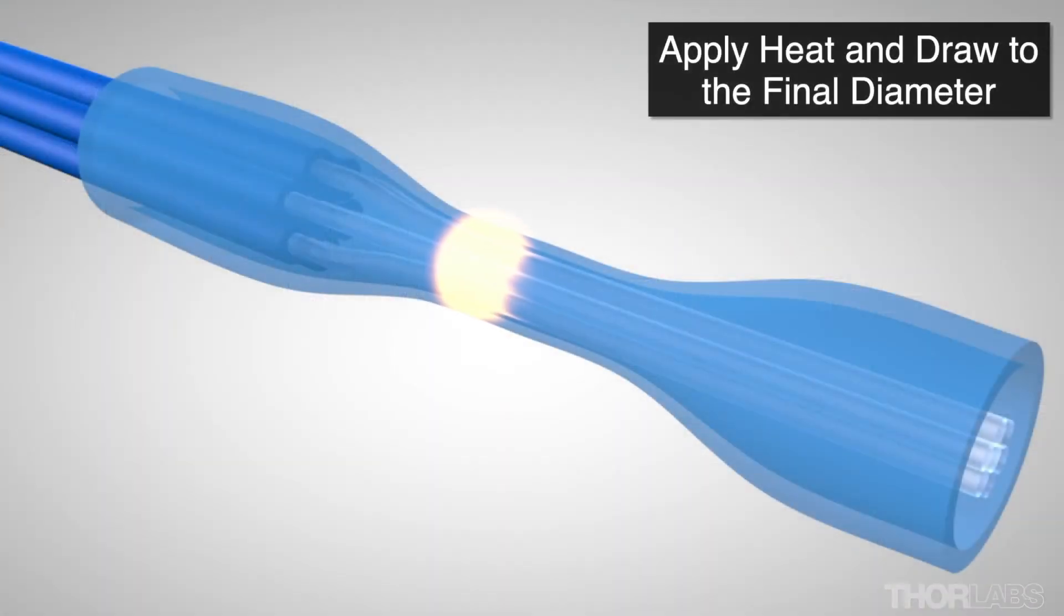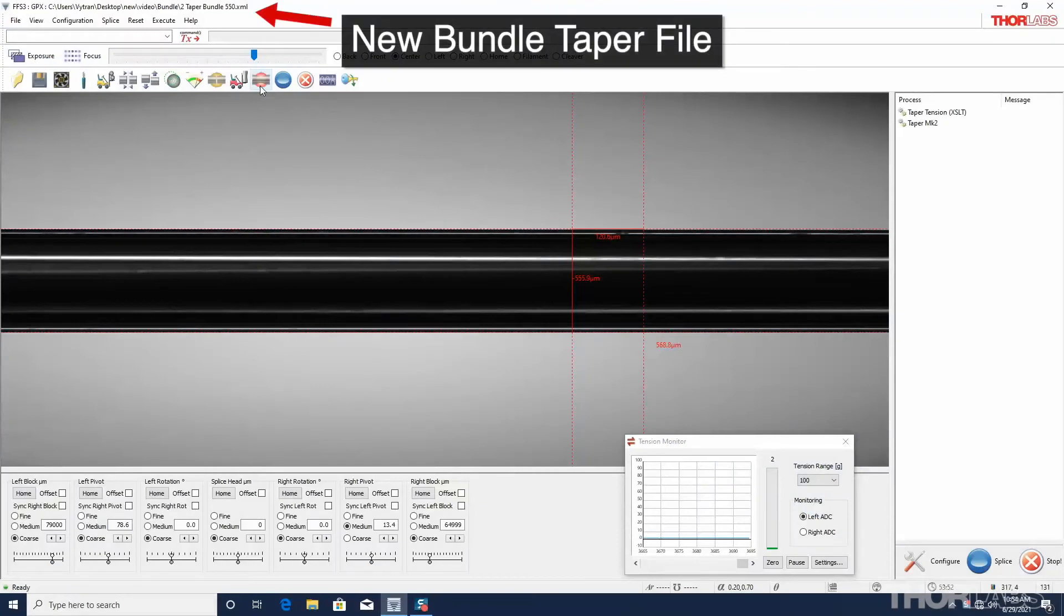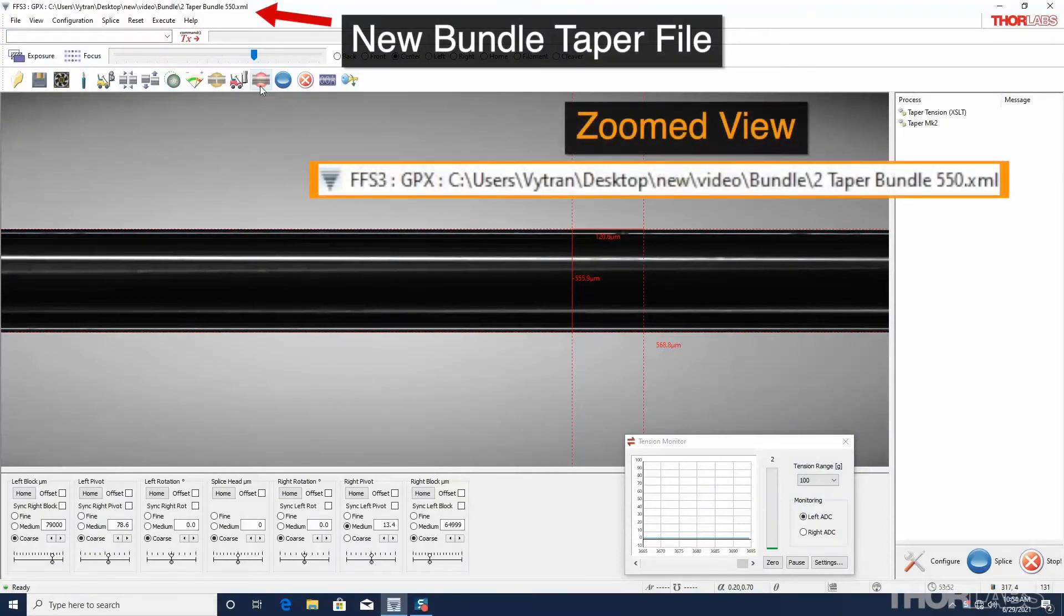Next, the GPX will be used to collapse the capillary onto the bundle and taper it to the target waist size. The filament power and fiber holding block movements are controlled by taper parameters in a new file.